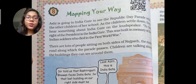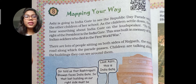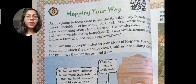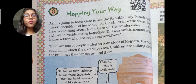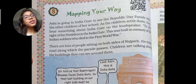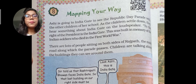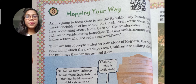Ashi is going to India Gate to see the Republic Day parade with the other children of her school. Ashi is the name of a student girl. She is going to India Gate to see the Republic Day parade — the march past.